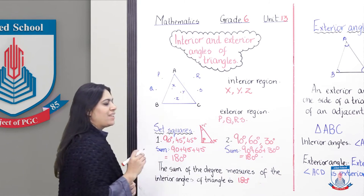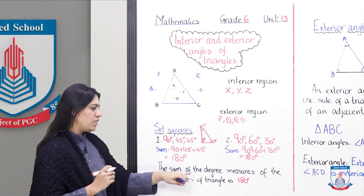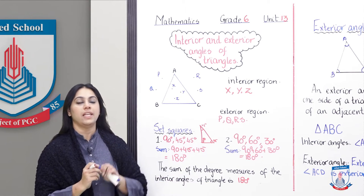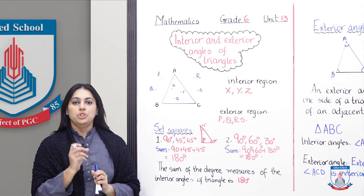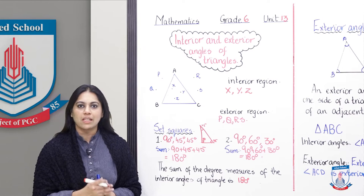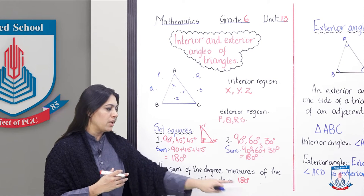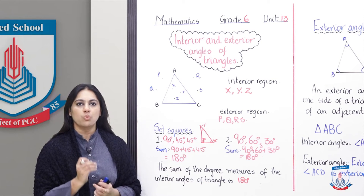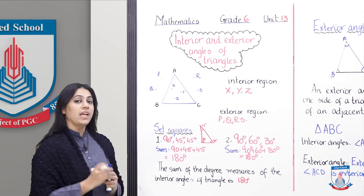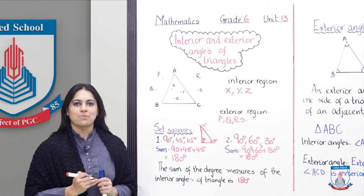So what do we conclude from this? The sum of the degree measures of the interior angles of a triangle is always equal to 180 degrees. Yes, children — jo bhi angles bante hain inside or interior region of the triangle, jab hum unhe add karenge, unka sum will always be equal to 180 degrees. This is our conclusion about interior angles of a triangle. Let's move towards the next board.